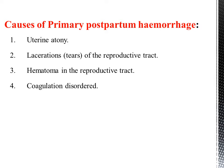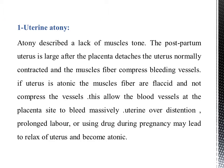Causes of primary postpartum hemorrhage include uterine atony, laceration, hematoma, and coagulation disorder. Uterine atony describes the lack of muscle tone of the postpartum uterus. After the placenta detaches, the uterus normally contracts and the muscle fibers compress the bleeding vessels. If the uterus is atonic, the muscle fibers are flaccid and do not compress the vessels, allowing the blood vessels at the placenta site to bleed massively. Uterine over-distension, prolonged labor, or use of certain drugs may lead to relaxation of the uterus and atony.